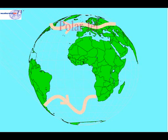The first is the polar jet, which travels west to east at about 30,000 to 35,000 feet, and the winds within it are generally stronger in the winter months. The polar jet drives areas of low pressure across the Atlantic, and it's closely connected to surface high and low pressure areas.